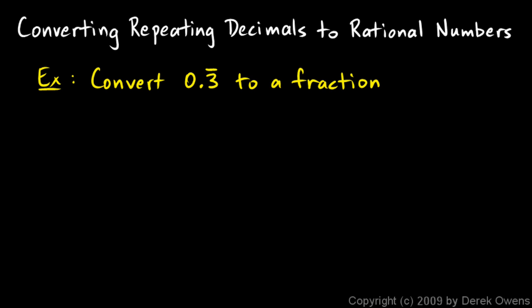Here's what I do to convert 0.3 repeating to a fraction. I'm going to start off using a variable x, and I'm going to say x is equal to 0.3 repeating. My goal is to write x another way, instead of writing it as a repeating decimal, to write it as a fraction. Here's what I do. I'm going to say 10x, well if x is equal to this, then 10x has to equal this multiplied by 10. When I multiply by 10, that just means I move the decimal point to the right one space. So 10x is going to be 3.3 repeating.